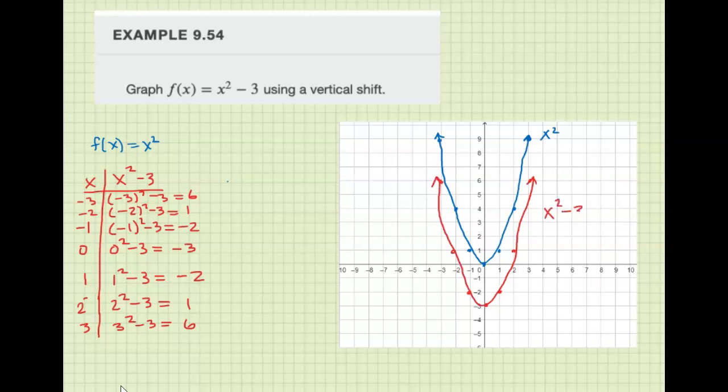This is x² - 3. You can see that all the original y values, we subtracted 3 from them, so all the points shifted down 3 units. It got translated vertically down 3 units from the original x² graph.